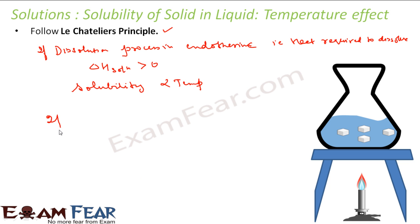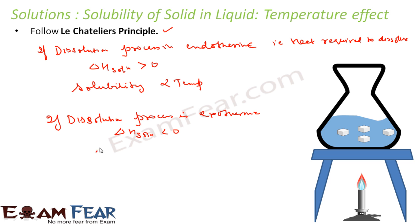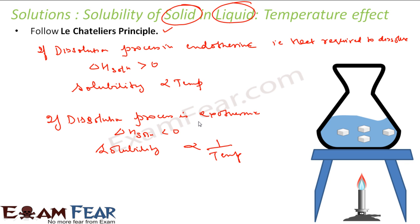Conversely, if the dissolution process is exothermic — heat is emitted, meaning ΔH solution < 0 — then solubility is inversely proportional to temperature. You increase the temperature, and solubility actually decreases. This has been proven experimentally. This applies to solubility of solids in liquid, and it is impacted by temperature.